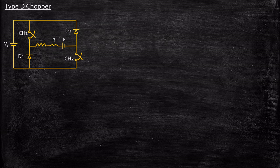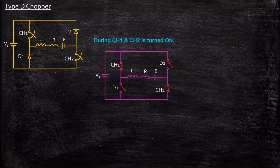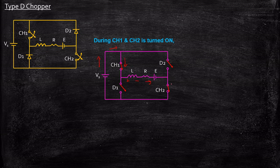Type D chopper operation can be classified into two different cases. First case: when chopper CH1 and CH2 are turned on simultaneously. Let us draw the equivalent circuit to understand how the circuit behaves. When CH1 and CH2 are fired simultaneously, the power supply starts flowing through the circuit. The inductor starts charging with a polarity plus and minus, and the current flows through this path and returns to the source. The output voltage is measured between these two points.